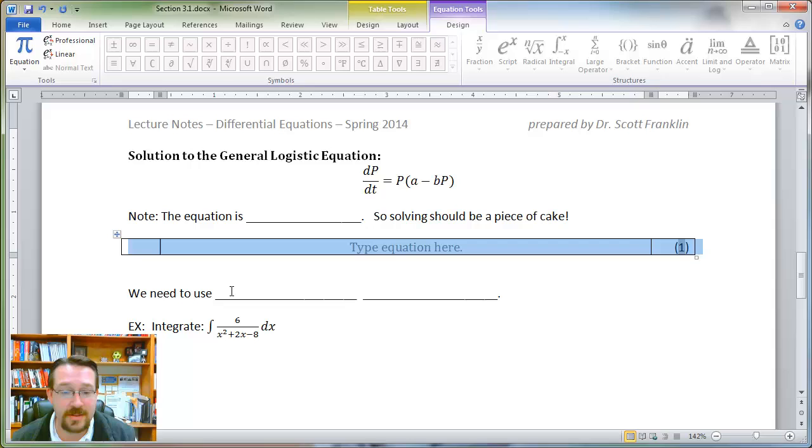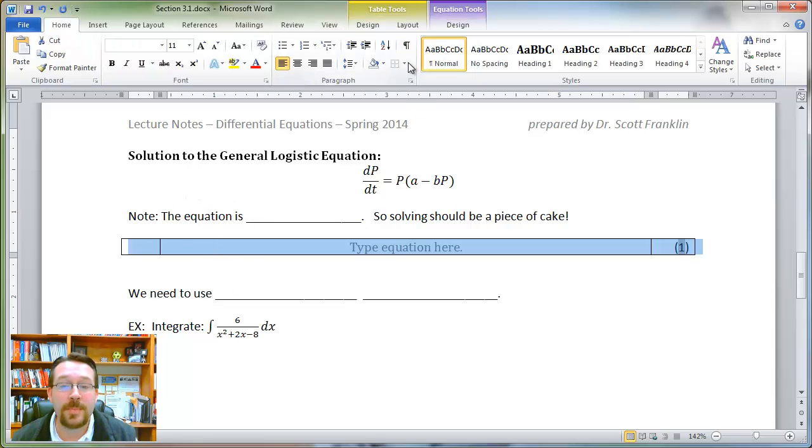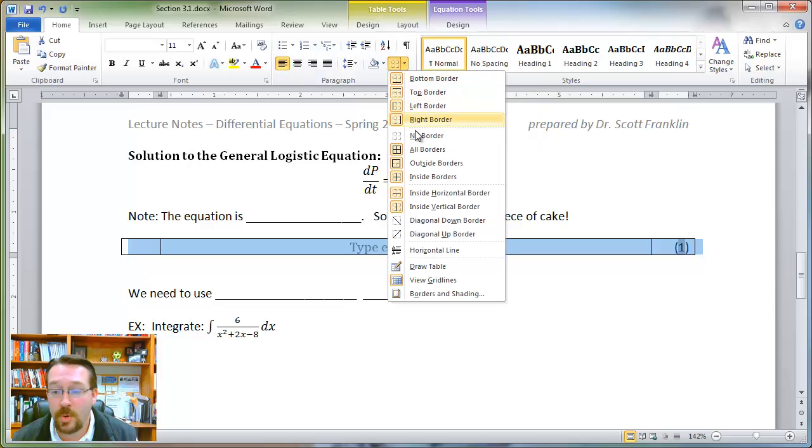To get rid of the borders, I'm going to select the entire table, go under the Home tab in the ribbon, and go to Select No Border.